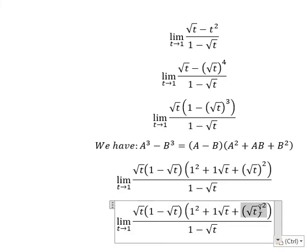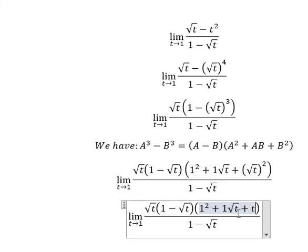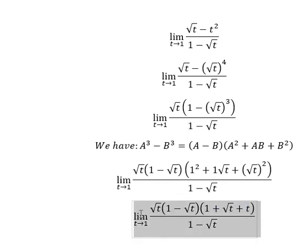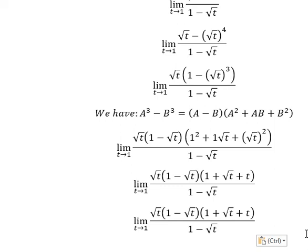So this one we have t, this one we have number 1. So we simplify 1 - √t on numerator and denominator.